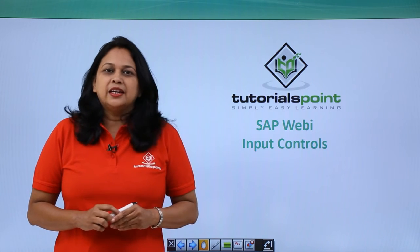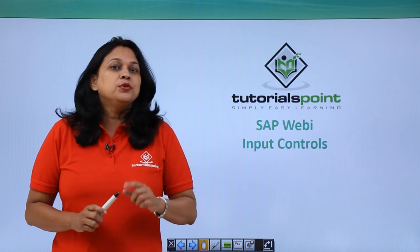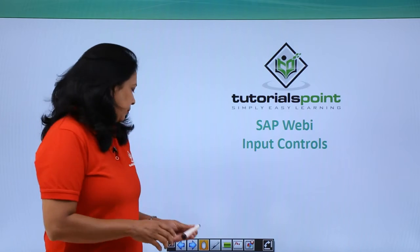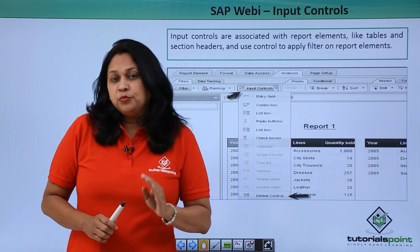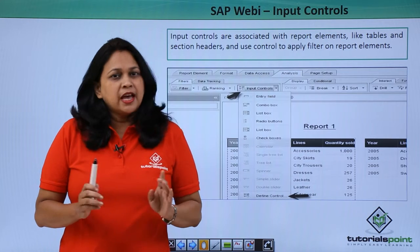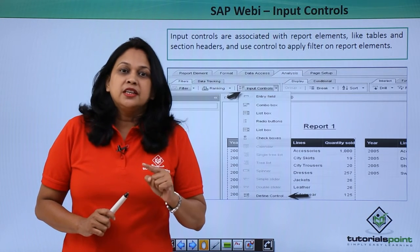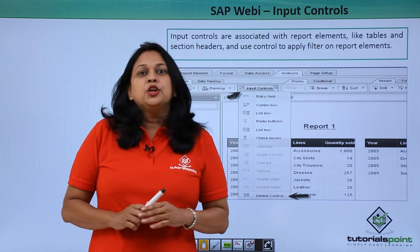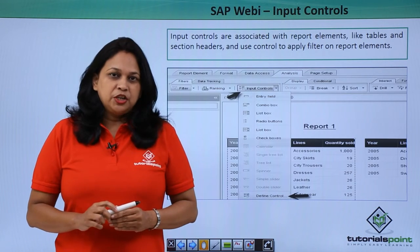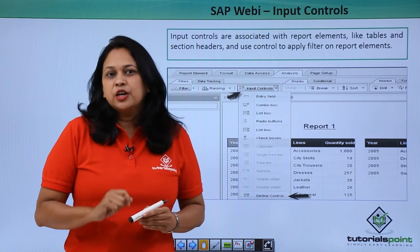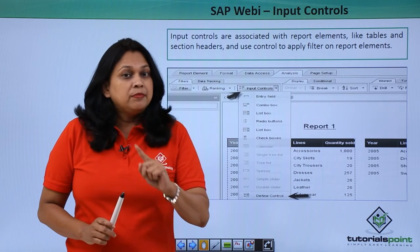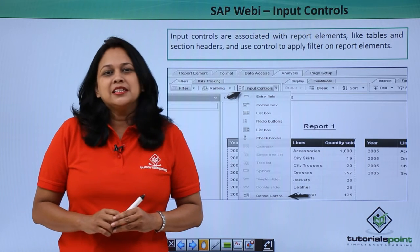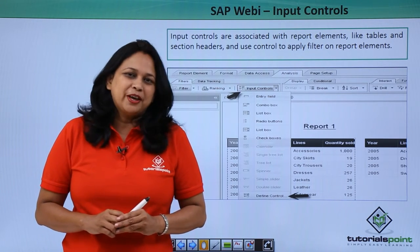In this video, we will see how in a Web Intelligence document you can use input controls to analyze the data more effectively. You can define input controls using text boxes and radio buttons. When a value is selected in an input control, it filters the data in the report element. You can select a single value or multiple values, and the data is displayed accordingly. A good thing is you can apply input controls on hierarchical data. Let us go to the SAP BO system and see how to use input controls in a WebI report.